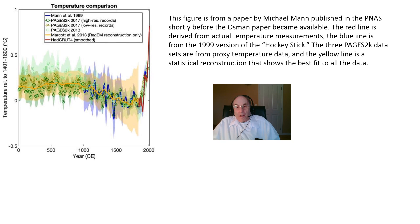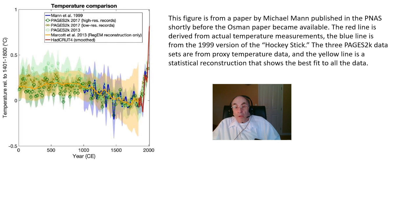Since the hockey stick graph by Michael Mann was first published in 1999, paleoclimatologists have worked to obtain information to reconstruct better temperature graphs. This figure from a recent Mann paper in the Proceedings of the National Academy of Sciences shows the red line from actual temperature measurements, the blue line from the 1999 hockey stick, three proxy temperature data sets, and a yellow line as the best-fit statistical reconstruction of all the data.